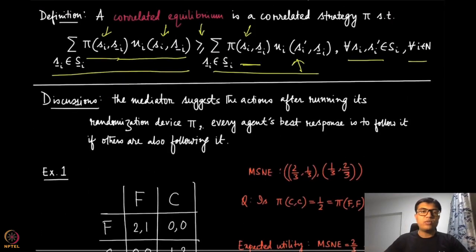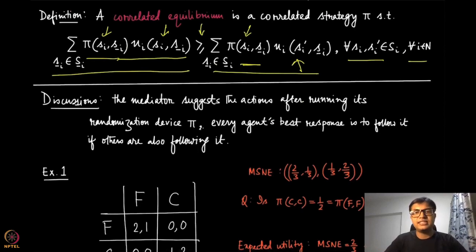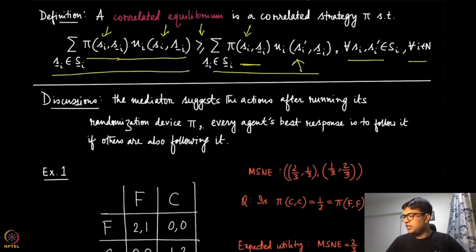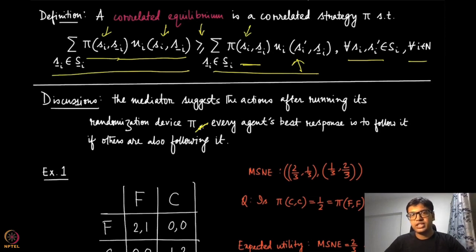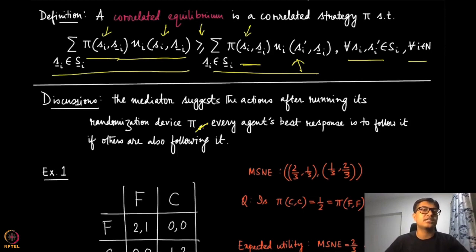One small remark: the mediator suggests actions after running its randomization device pi — no subscript, because it is not component-wise. Every agent's best response is to follow it if others are also following it. That is the whole intuition of correlated equilibrium summarized in one sentence.